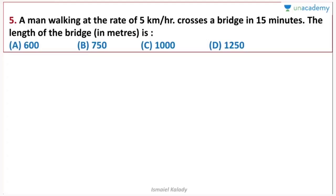A man walking at the rate of 5 km per hour crosses a bridge in 15 minutes. The length of the bridge in meters — the speed is 5 km per hour. We need to find the length in meters. It is easy for us to use.